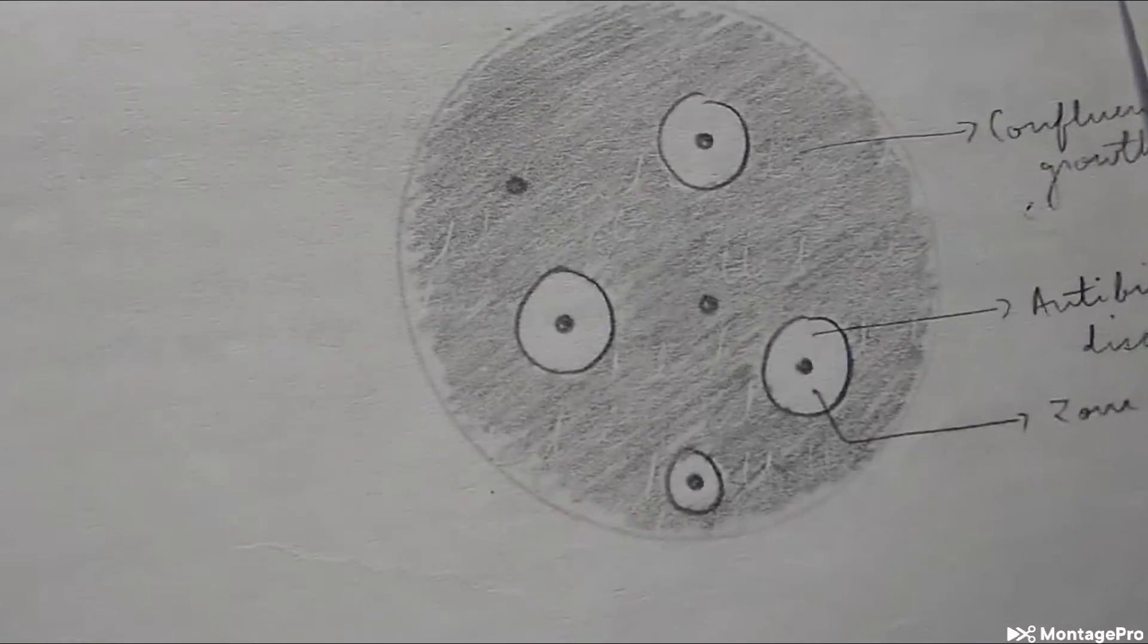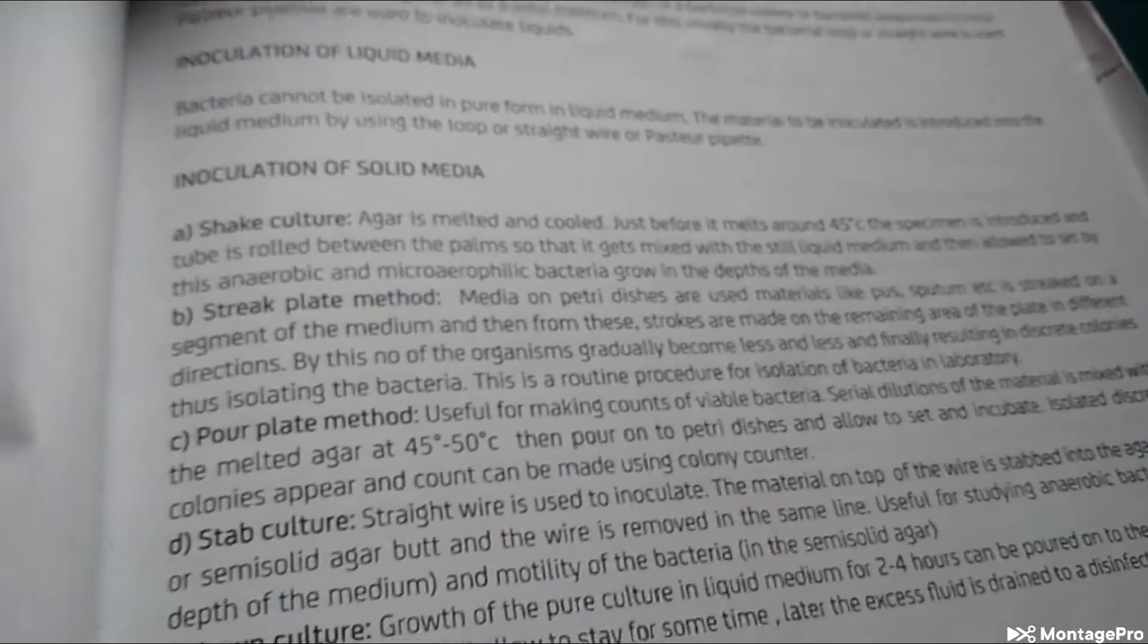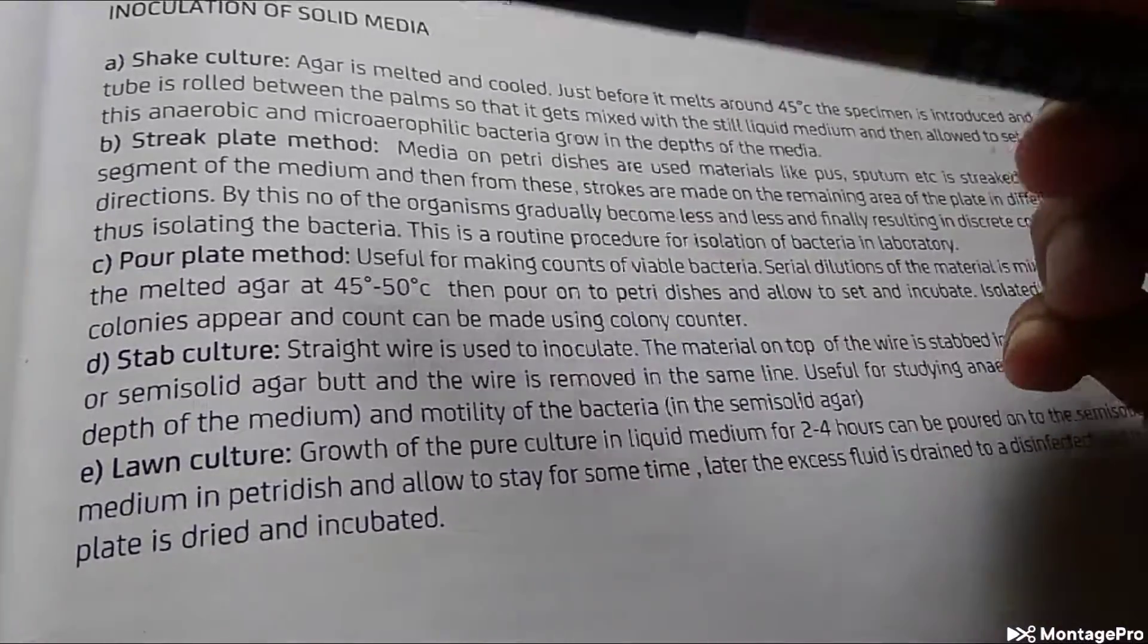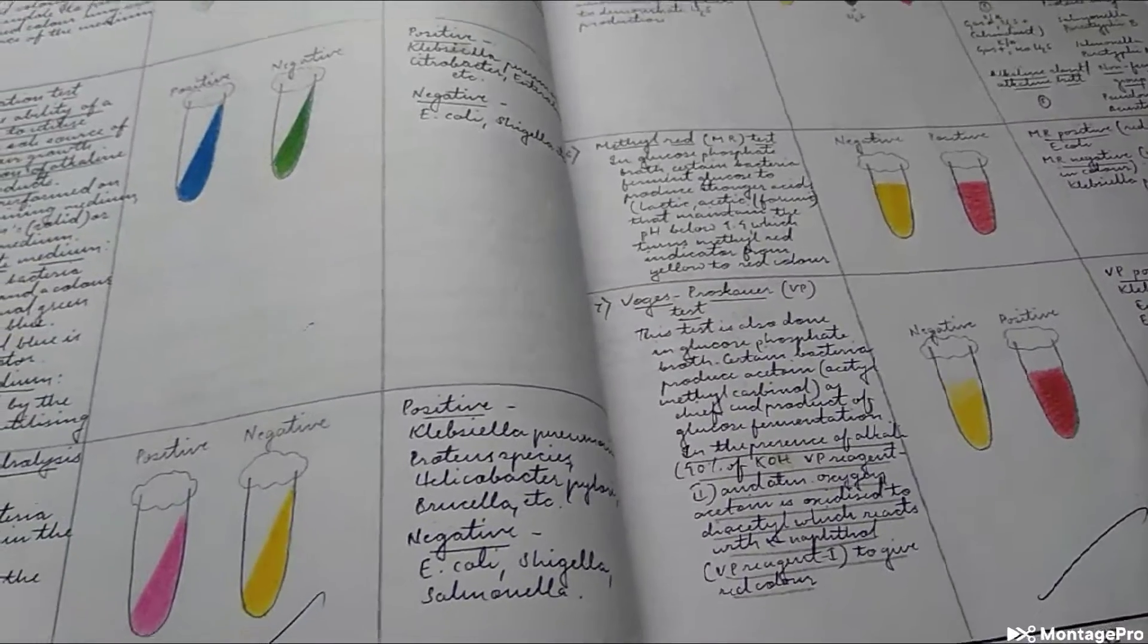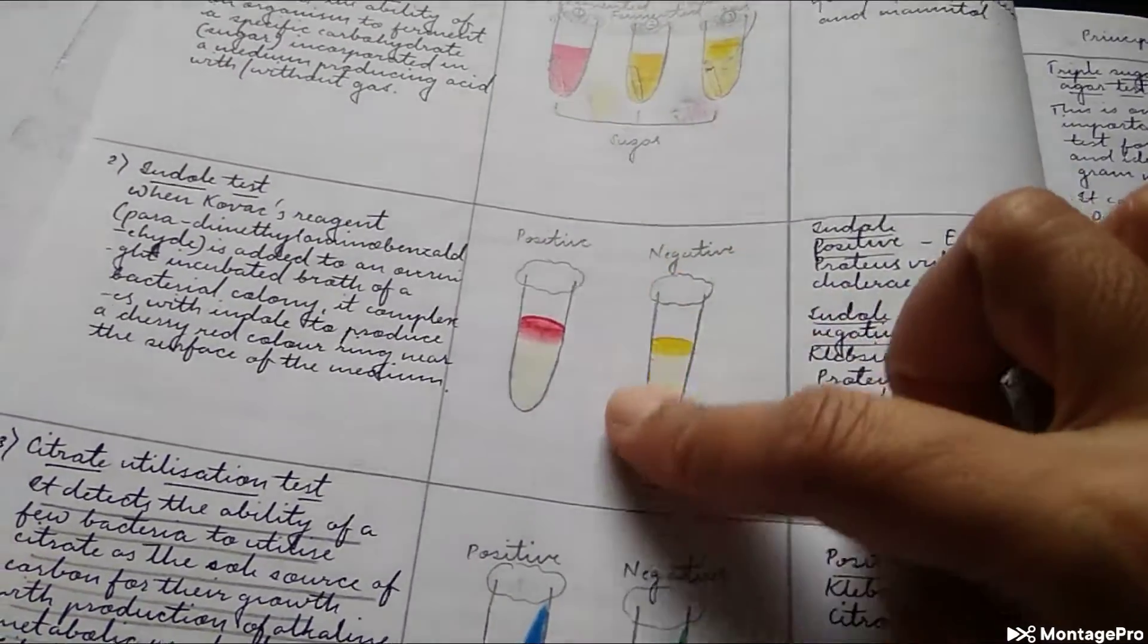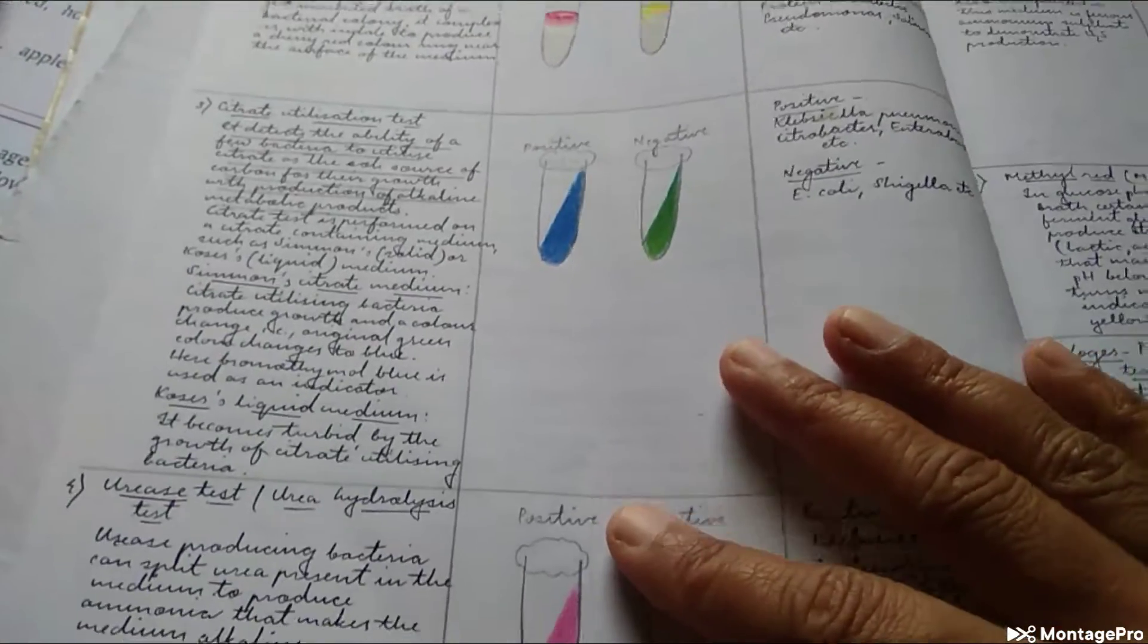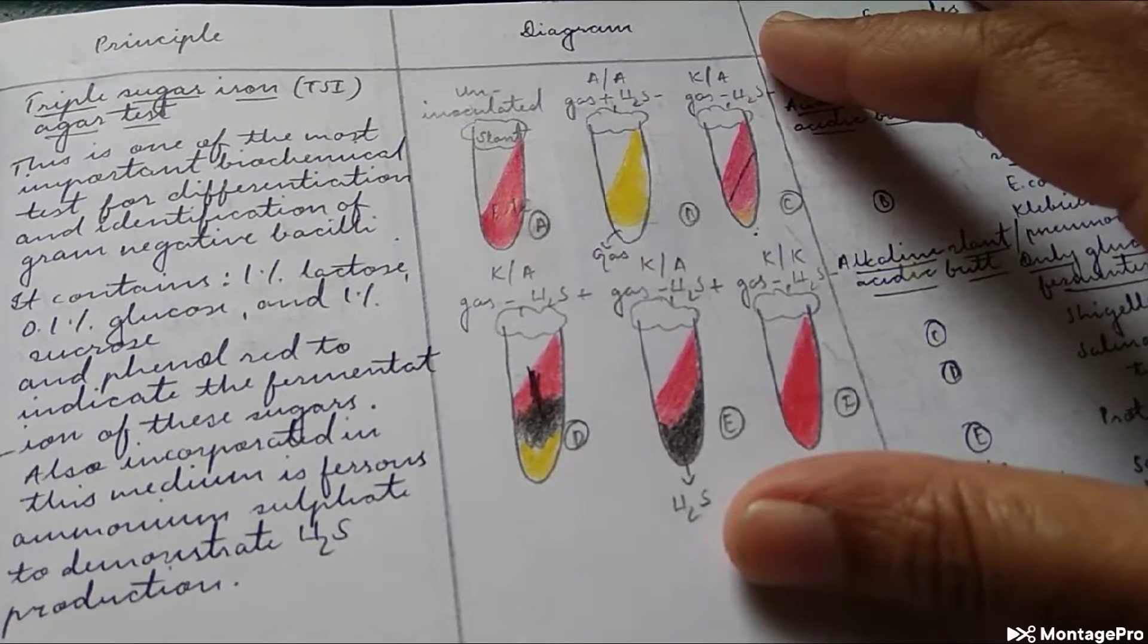Culture methods - you have liquid culture, solid media streak, that zigzag pattern of streaks, stab, lawn culture, shake culture. This is slope, citrate utilization test, indole test, carbohydrate fermentation test with sugars fermented or non-fermented, urease test. You'll have to write for every bacteria what the results will be. This is triple sugar iron, TSI agar test.